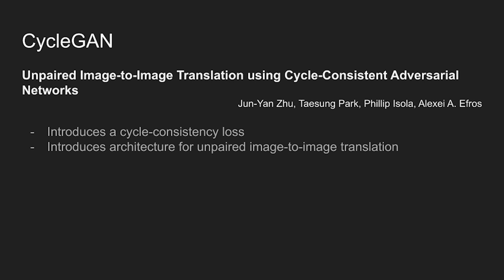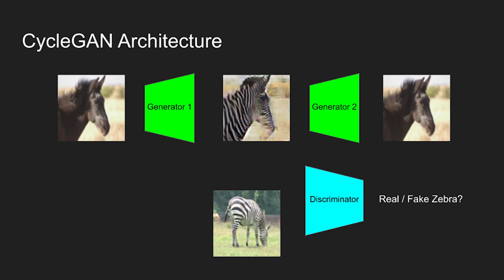CycleGAN is an architecture introduced in 2017 designed specifically to perform image-to-image translation on unpaired sets of images. The architecture uses two generators as well as a discriminator. The two generators are often variations of autoencoders, and they take an image as input and return an image as output. The discriminator, however, takes an image as input and outputs one single number.